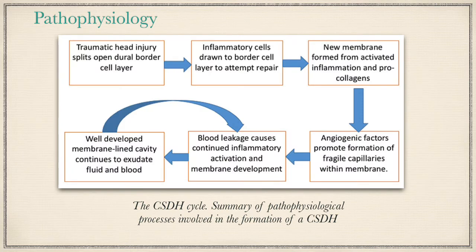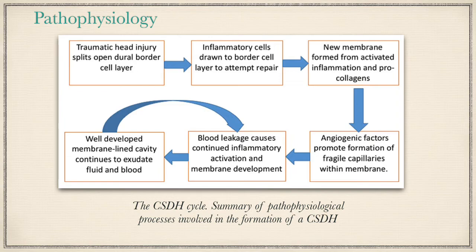This diagram summarizes the pathophysiology of chronic subdural hematoma. Head trauma leads to splitting of the dural border cell layer, then inflammatory cells are drawn to the border cell layer attempting at repair. A new membrane forms from activated inflammation and procollagen. Angiogenic factors promote formation of fragile capillaries within the formed membranes, and blood leakage starts from these fragile vessels, causing continued inflammatory activation and membrane formation. Finally, the well-developed membrane-lined cavity continues to exudate fluid and blood, leading to expansion of the chronic subdural hematoma.